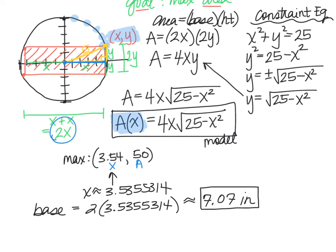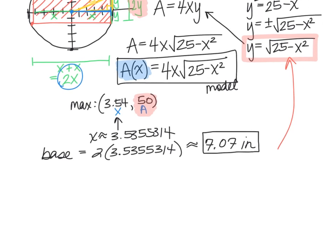Now looking back at my diagram, the height of my rectangle here was two times the Y value. And remember, when I labeled my maximum, this value of 50, it wasn't the Y value, it was the area. So if I look at my constraint equation, this was the equation that actually related X and Y. So I need to do a little bit of work. I'm going to use that constraint equation, Y equals the square root of 25 minus X squared, to obtain my Y value. And then I'll use that to get my height. So let me scoot this up a little bit.